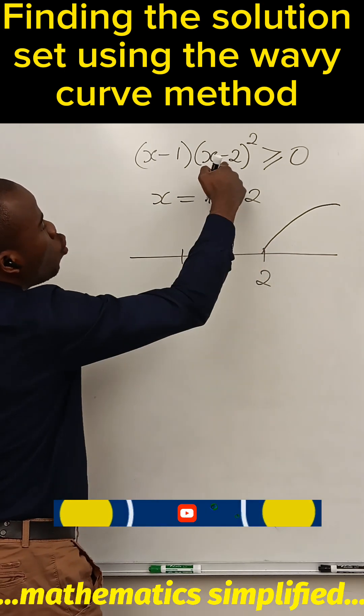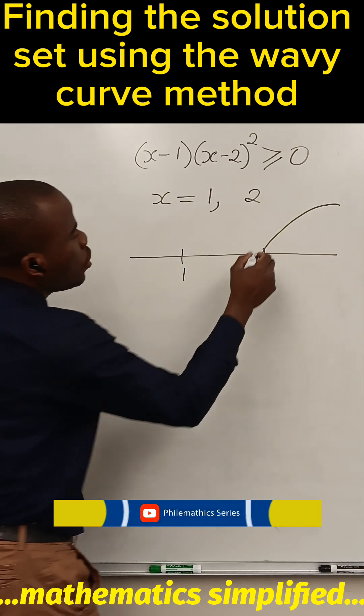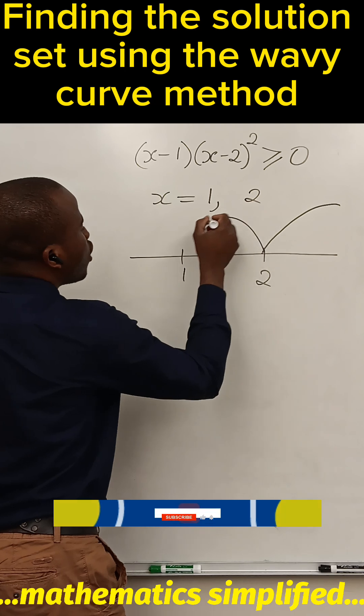At the value at 2, the power is even, so the sign remains. It doesn't cross.